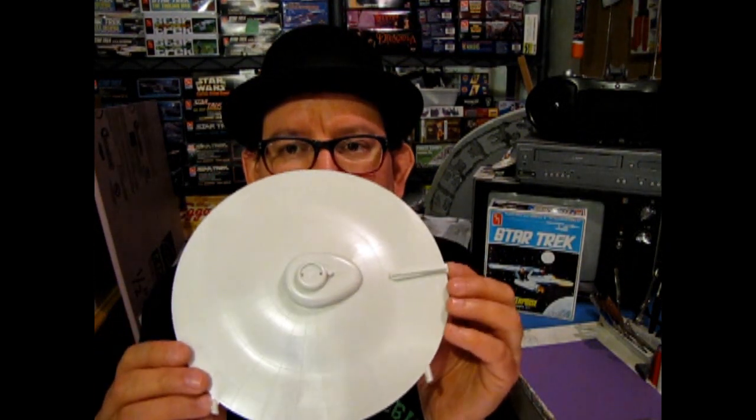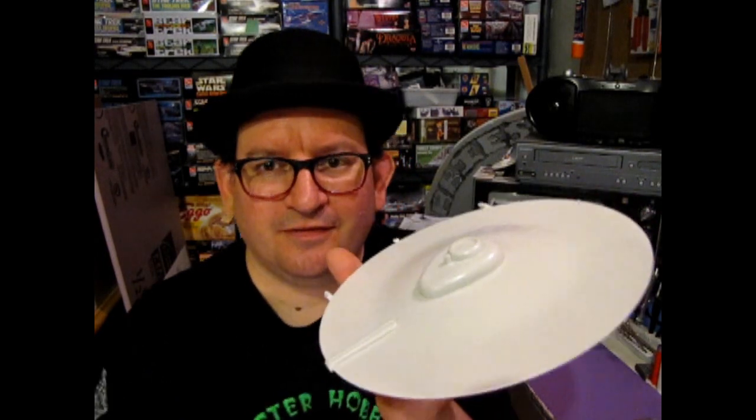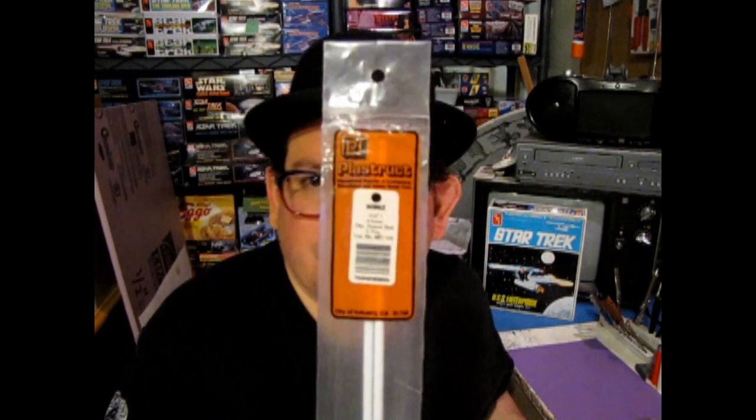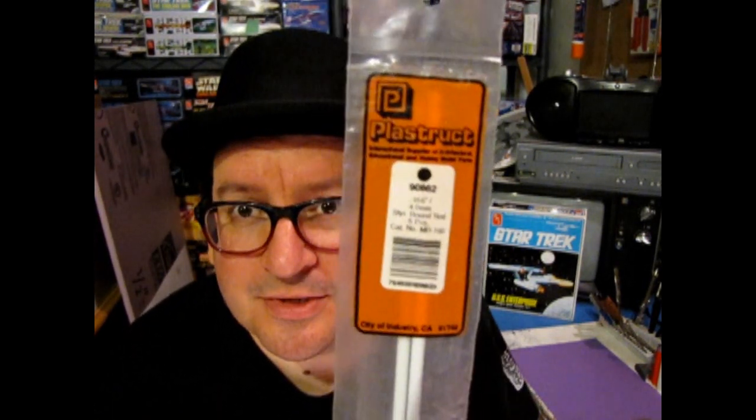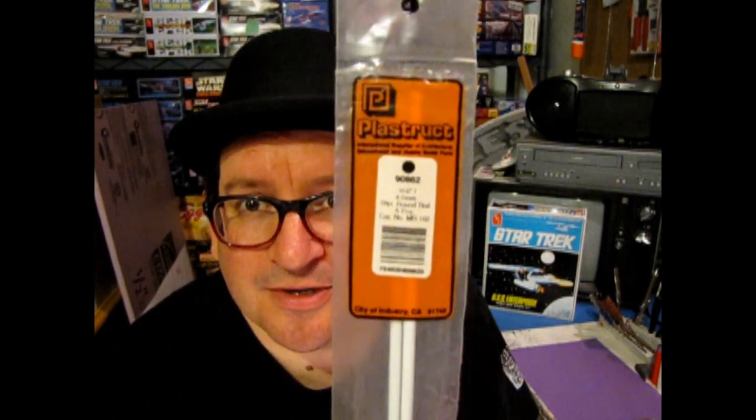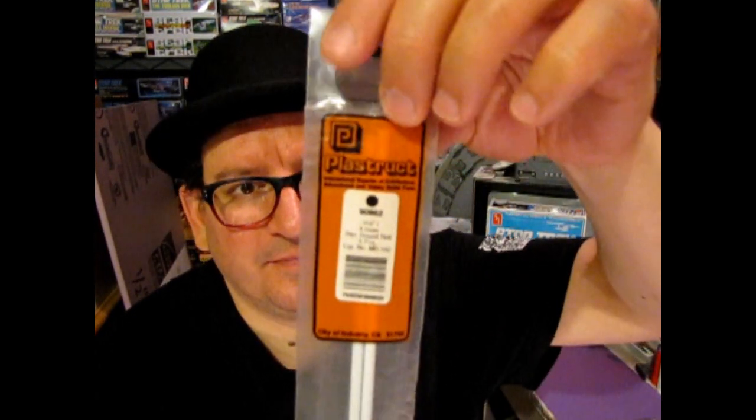So, this is one of the problems with the 18-inch kit, kit number 6676. In order to correct this, we're actually gonna cut off the Turbo Elevator, and we're going to replace it with some of this round, solid, plastic.